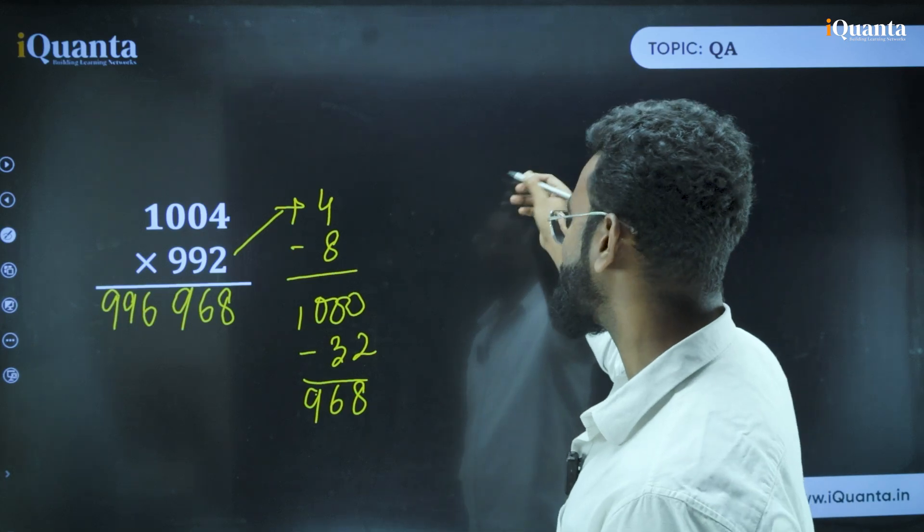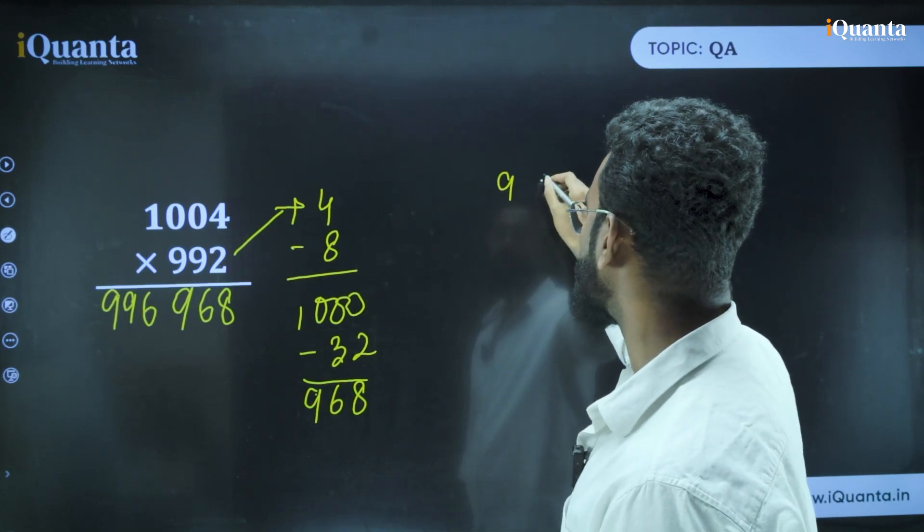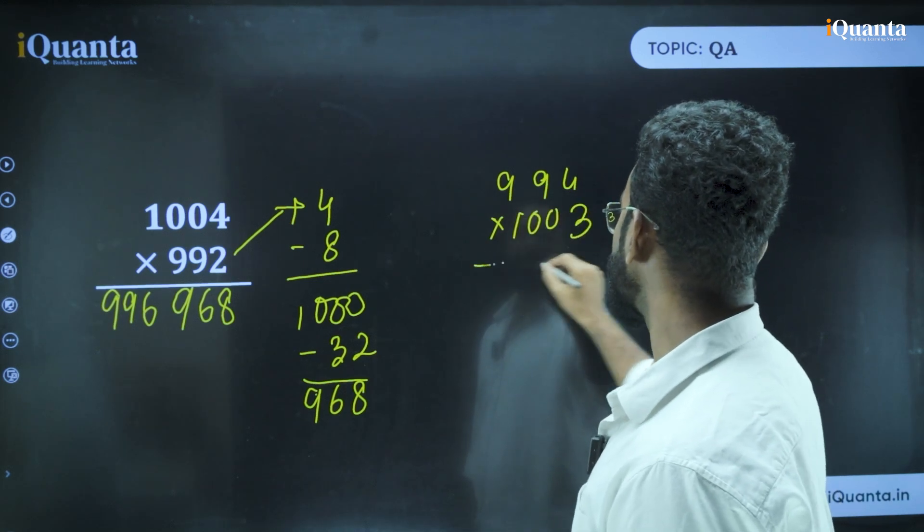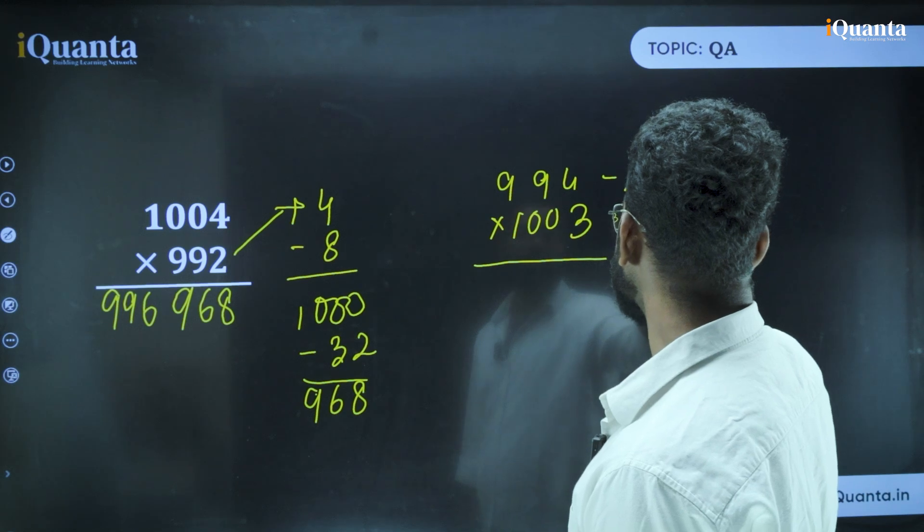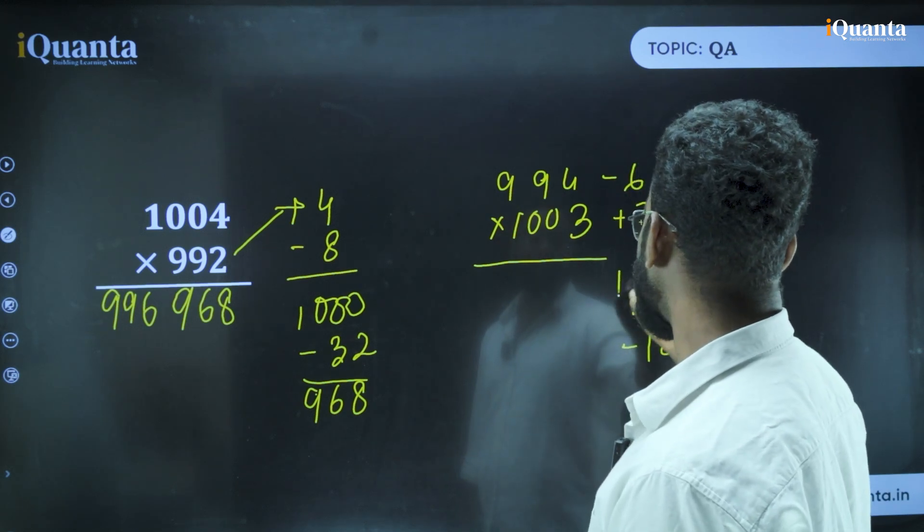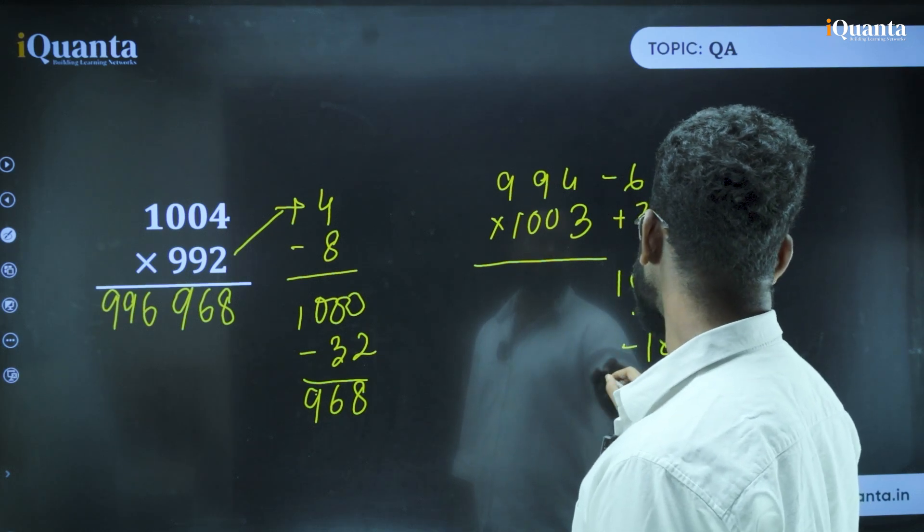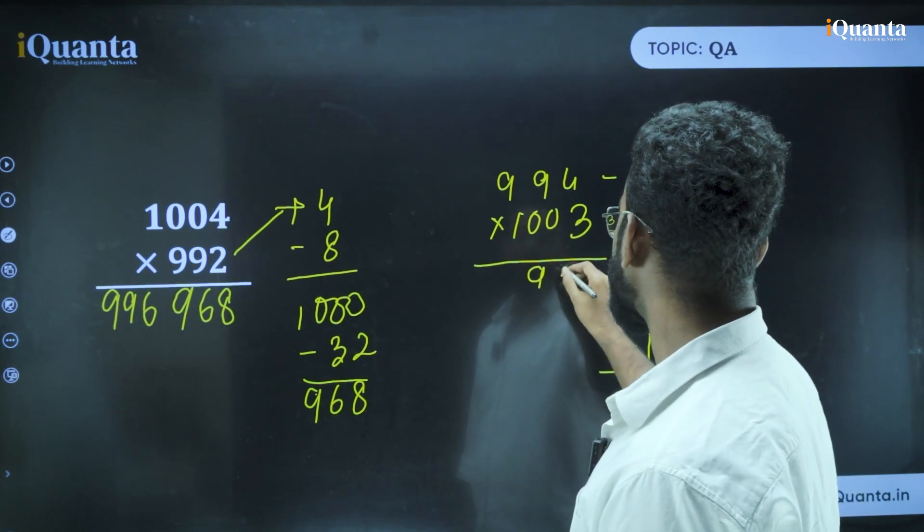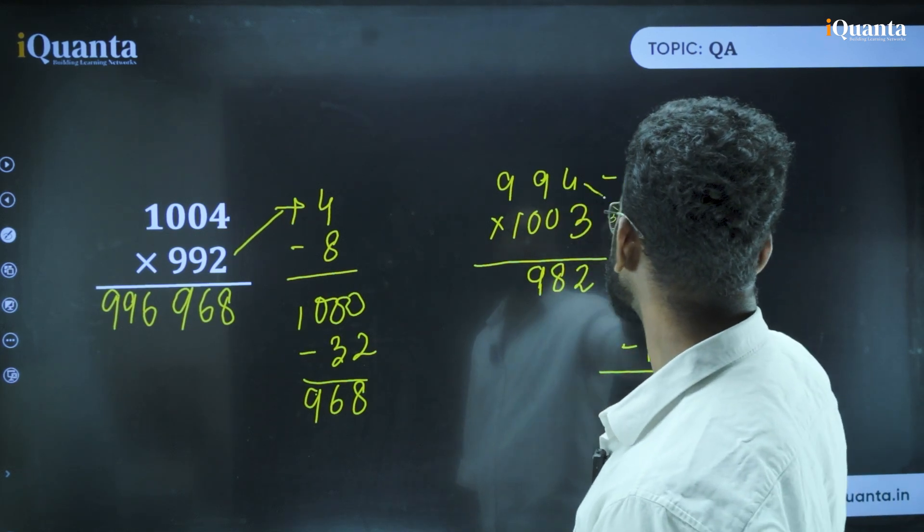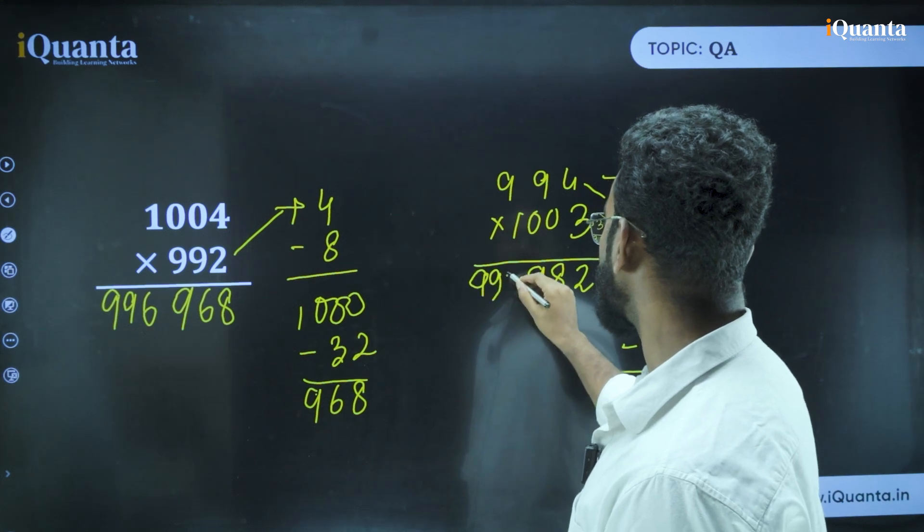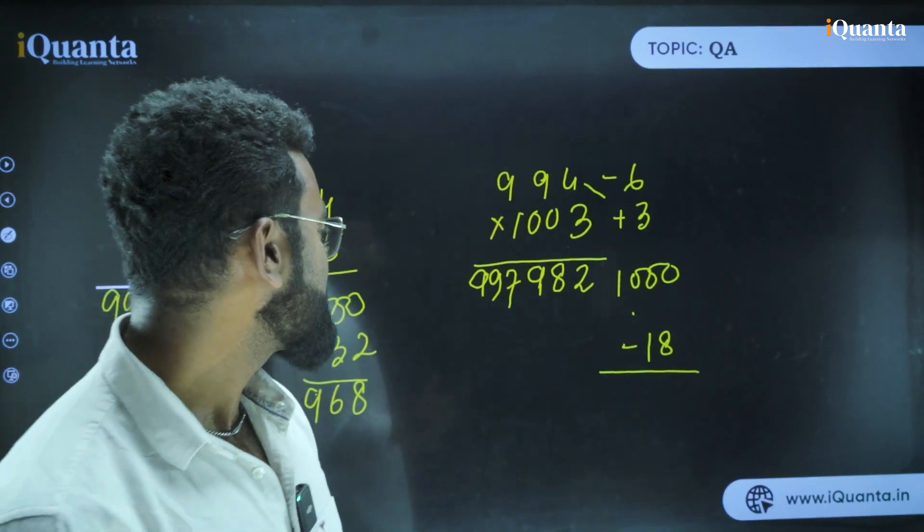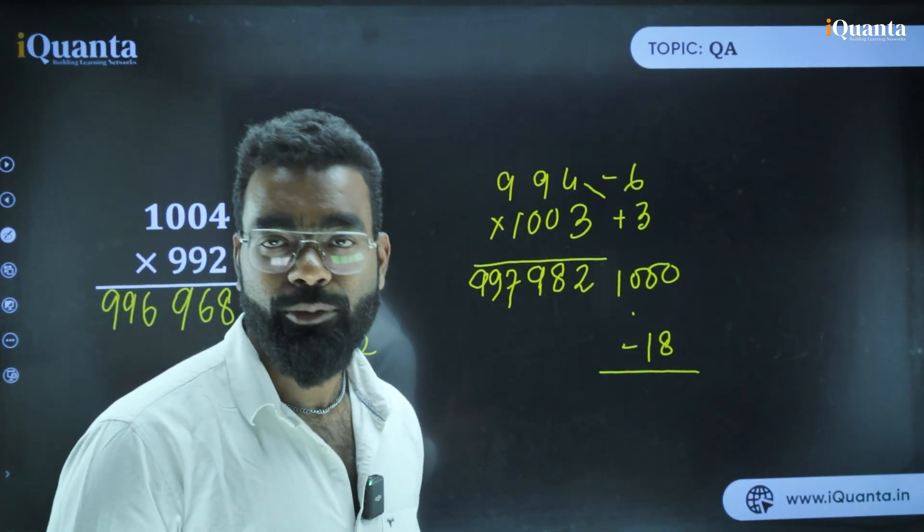I am giving you another question. Let's say this is 994 into 1003. In this case, what will happen? This is minus 6 and this is plus 3. So this is basically giving you minus 18. I cannot have minus 18. So I am subtracting from 1000. If it is from 1000 minus 18, it is nothing but 982. And 994 plus 3 is 997. So your answer is 997982. This is how we can solve this type of question. I hope you are getting it. This is the technique that we're using to solve this type of question.